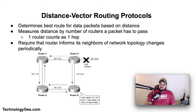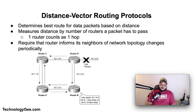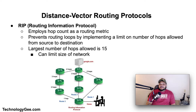Routers on which a distance vector protocol is implemented exchange information with one another — usually routing tables plus hop counts for destination networks and possibly other traffic information. Distance vector routing protocols also require that a router inform its neighbors of the network topology changes periodically.